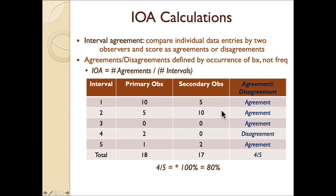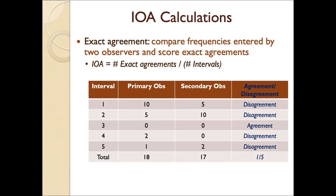Agreements are scored when both data collectors indicated behavior was observed, and there is also an agreement when they both agree that behavior did not occur. The only time you have a disagreement is when one observer recorded behavior and the other one did not. A more conservative measure of agreement scores would be exact agreement, which applies to frequency data. In this case, we score an agreement only if both observers scored the exact same frequency.